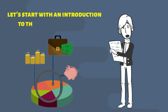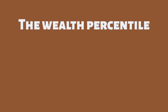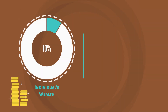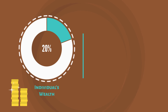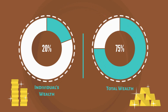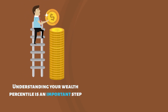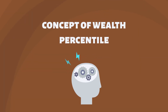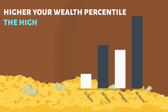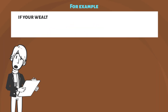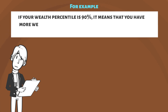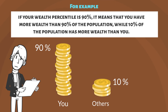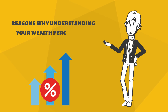Let's start with an introduction to the wealth percentile. The wealth percentile is a measure of where an individual's wealth stands in comparison to the rest of society. It's a percentage that represents an individual's wealth in relation to the total wealth of all individuals in a given population. Understanding your wealth percentile is an important step in managing your finances and achieving your financial goals. The concept is simple: the higher your wealth percentile, the higher your wealth is compared to others. For example, if your wealth percentile is 90%, it means that you have more wealth than 90% of the population, while 10% of the population has more wealth than you.